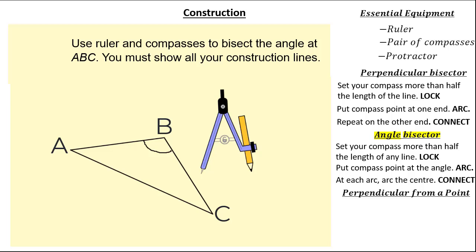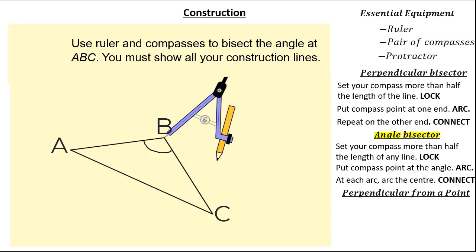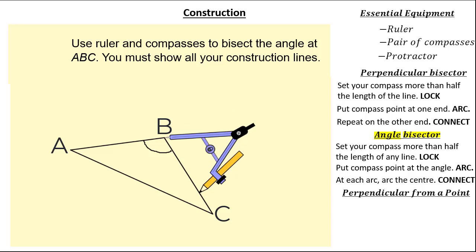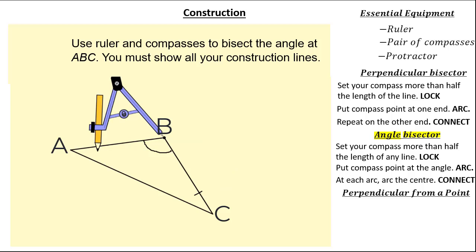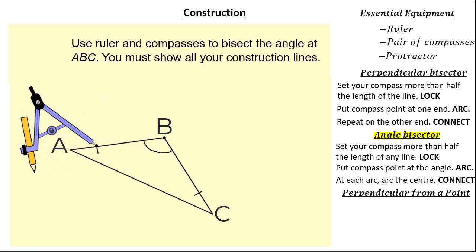Let's follow these steps. Step one: set my compass for more than half the length of any line — I'm going to use this line, and visually setting it for more than half the length is about here. Locking and putting my compass point at point ABC, I'm going to arc here and arc here. Now where we've done our arcs, we simply move our compass point to those arcs and then arc the centre.